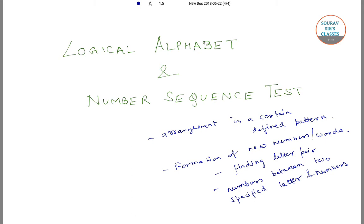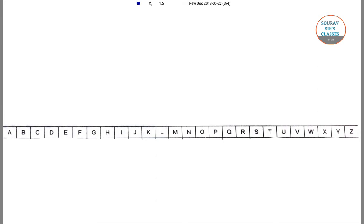In English alphabets there are 26 letters, out of which A, E, I, O, and U are vowels and the remaining are consonants.